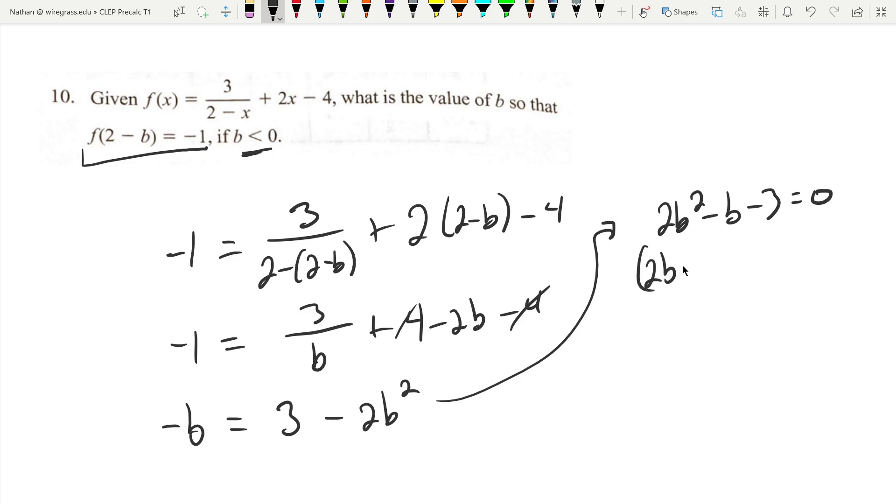That factors down into 2b minus 3 and b plus 1.